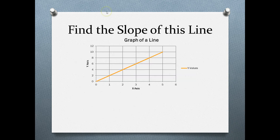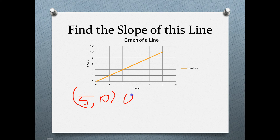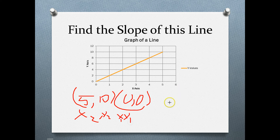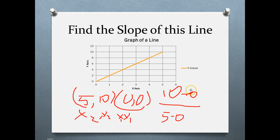Let's find the slope of this line. We'll pick two points: (5, 10) and (0, 0). We'll call (5, 10) x2 and y2, and (0, 0) x1 and y1. Using our formula: y2 minus y1 is 10 minus 0, over x2 minus x1, which is 5 minus 0. Since subtracting 0 means nothing, this is just 10 divided by 5, which equals 2. So the slope of this line is 2.